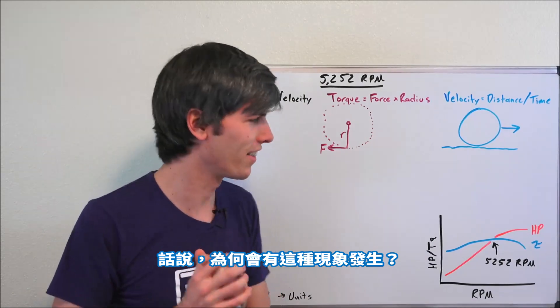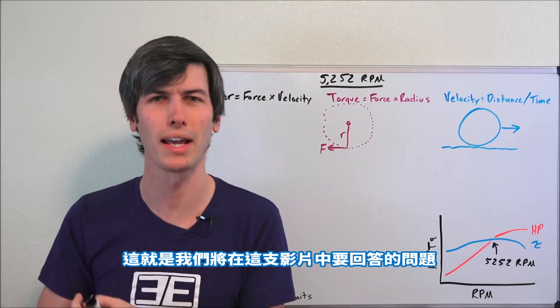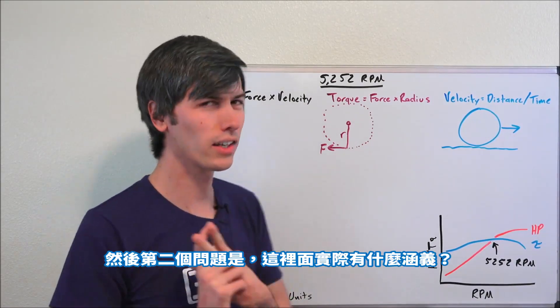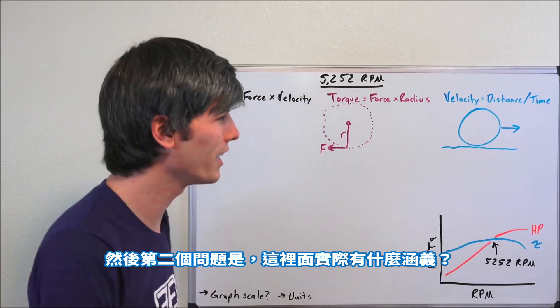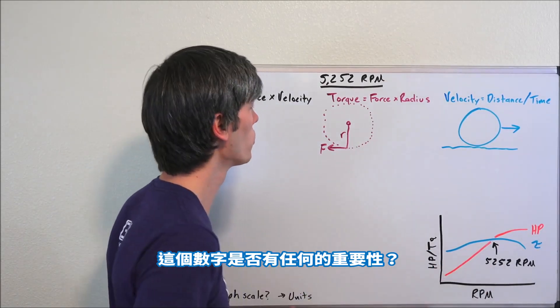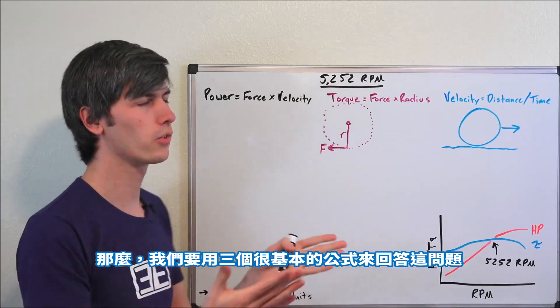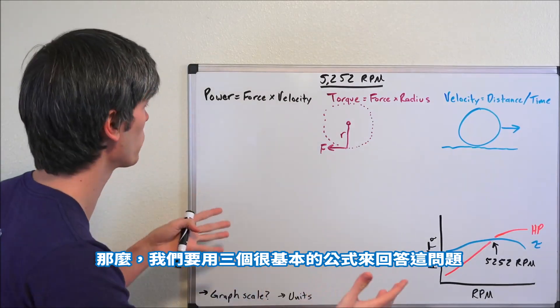Now why does this happen? Well, that's the question we're going to be answering in this video, and then the second question: does that actually mean anything? Is there any significance to this number? So we're going to be answering the question using three fundamental basic truth equations.